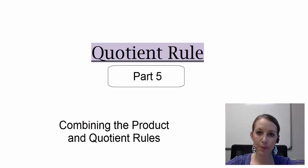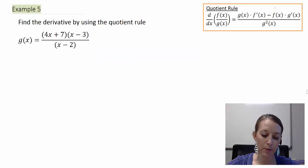We are working through some examples by using the quotient rule, so let's go ahead and look at our next example. Here I have g of x equals 4x plus 7 times x minus 3, all over x minus 2. Clearly we see a fraction or a quotient, so that means we actually have to do the quotient rule.